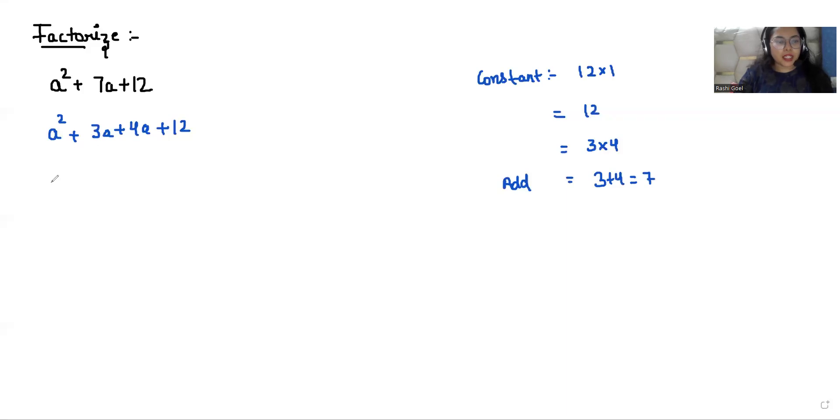From the first two terms, I can take 'a' as common. So a(a + 3), and from the next two terms, I can take 4 as common. So 4(a + 3).